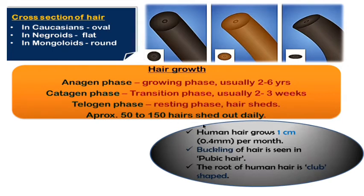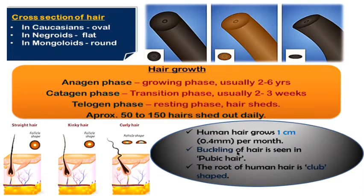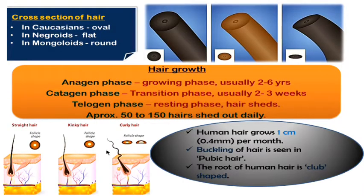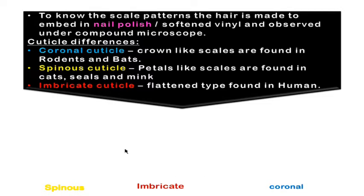Human hair grows approximately one centimeter per month, or about 0.4 millimeters per day. Buckling — a kinky, curly appearance with a degree of variation in the shaft — is observed only in pubic hair. The root of human hair is club-shaped, which is different from animal hair.